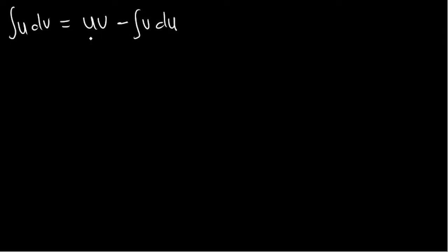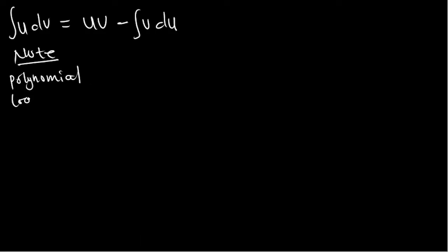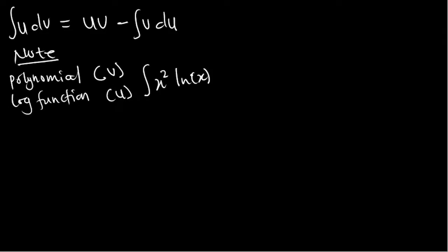Let's look at some helpful tips for choosing parameters. First, if a question involves a product where one factor is a polynomial and the other is a logarithmic function, then you make the polynomial your dv and the log function your u. For example, for the integral of x²·ln(x), choose u = ln(x) and dv = x².